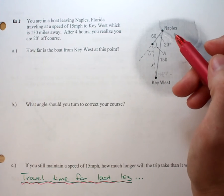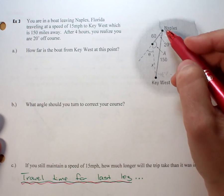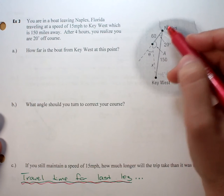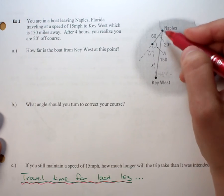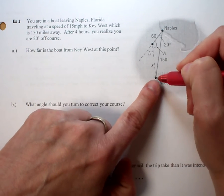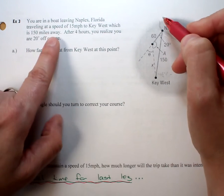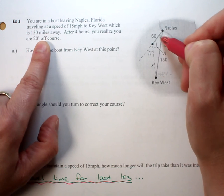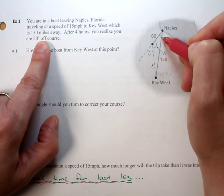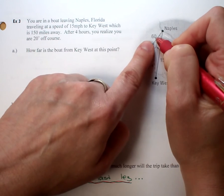I'm in my boat leaving Naples heading to Key West. However, I eventually realize that I'm 20 degrees off course. That's what this 20 represents.